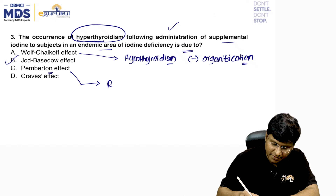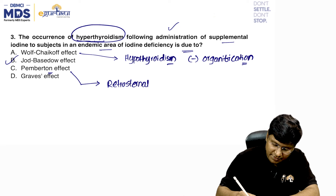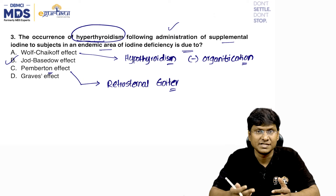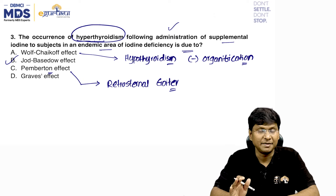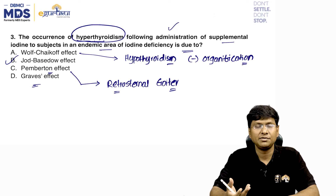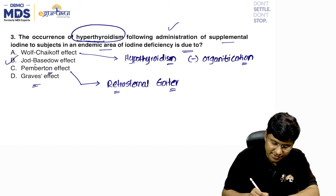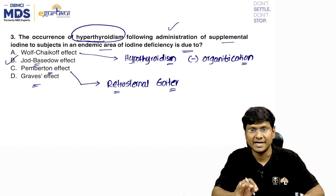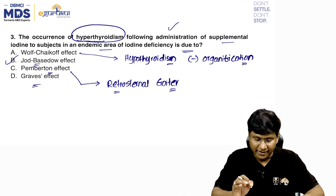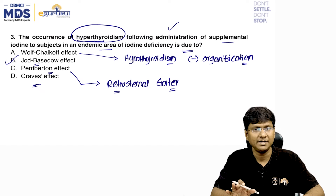Pemberton sign is a feature of retrosternal goiter. When a patient with retrosternal goiter raises their arms, the goiter can compress the superior vena cava causing facial congestion — that is the Pemberton sign. Graves' disease is an autoimmune disorder causing hyperthyroidism. So the correct answer is the Jod-Basedow effect.